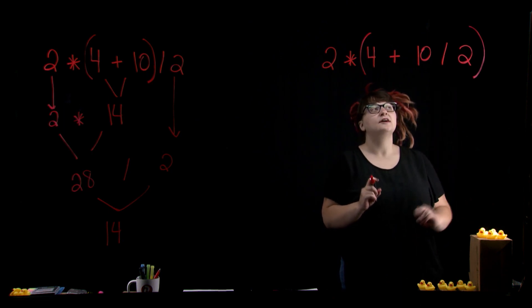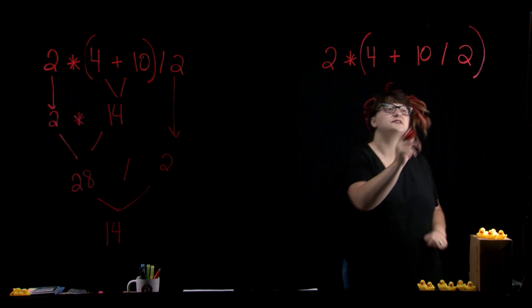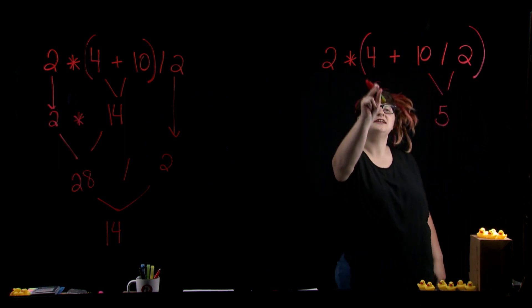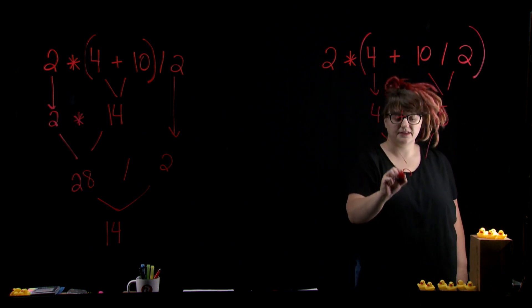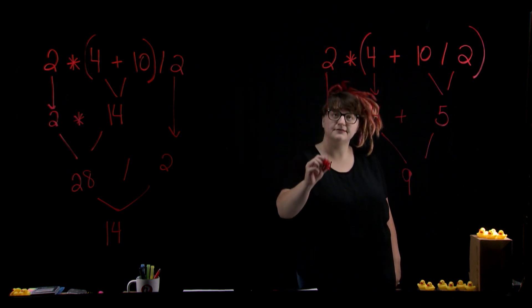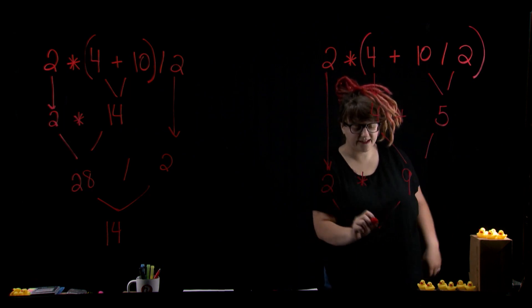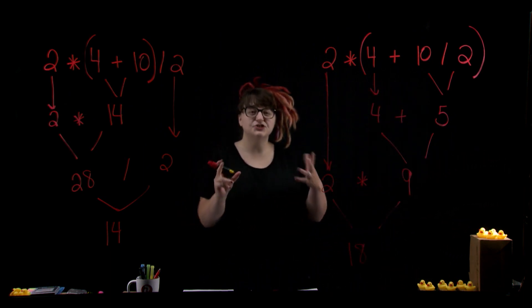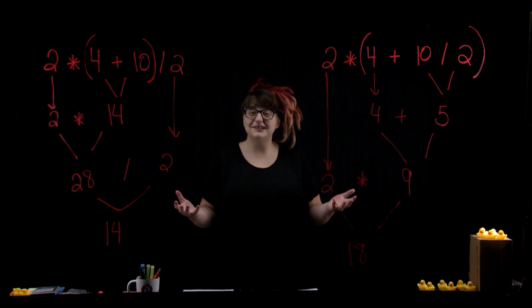So now within our parentheses, we still have to apply PEMDAS on a local level. Division happens first: 10 divided by 2 gives us 5. Then we bring our 4 down: 4 plus 5 gives us 9. And then finally, multiplying by 2: 9 times 2 gives us 18. Voila! So just by using parentheses, we got different results from this exact formula. Don't be afraid to use them — they're free, go crazy, put them wherever you need to.